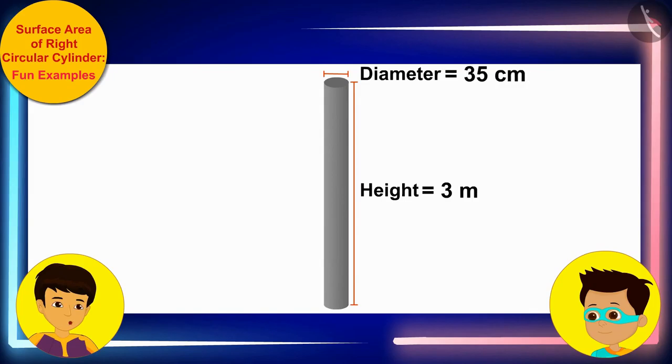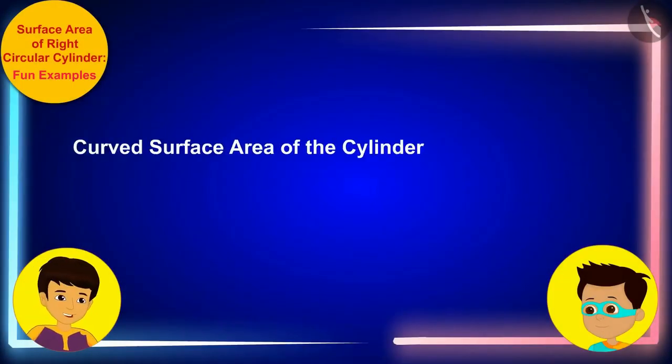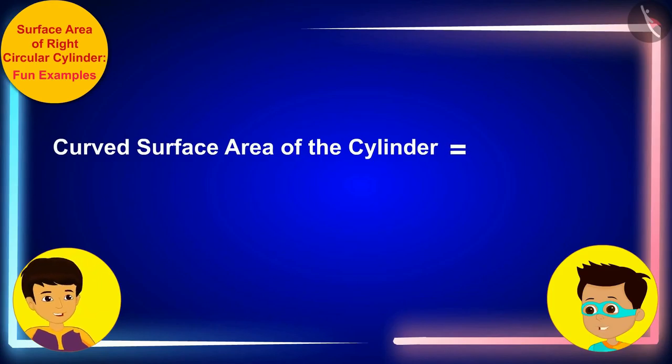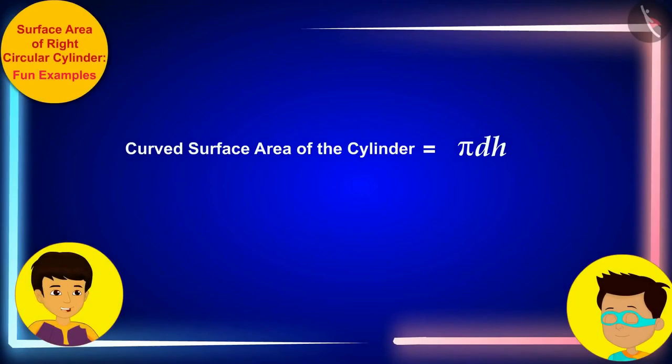Thomas, do you remember the formula for the curved surface area of cylinder? Yes, Manas, the curved surface area of the cylinder is pi dh, where d and h are the diameter and height of the cylinder respectively. Well done, Thomas.